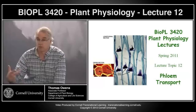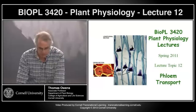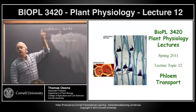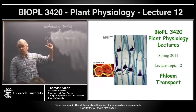The roots are almost always sinks. So the thing we need to think about is: if we're going to generate bulk flow from metabolic sources to metabolic sinks, how do we generate the pressure gradient that drives that bulk flow?